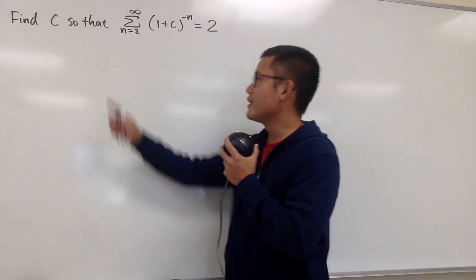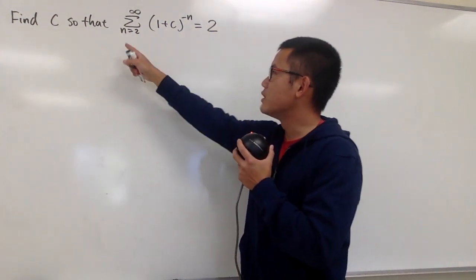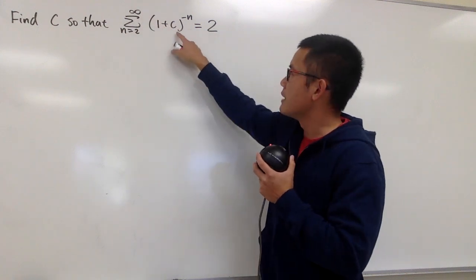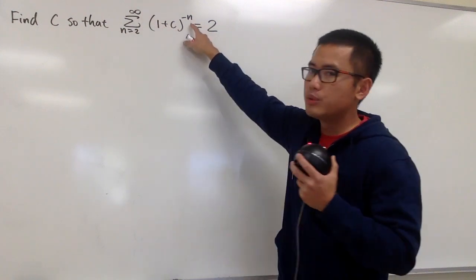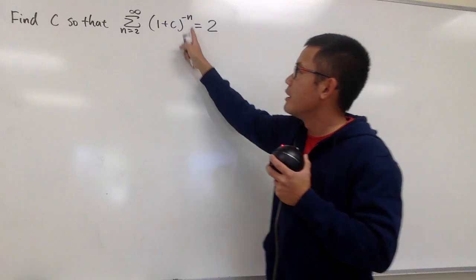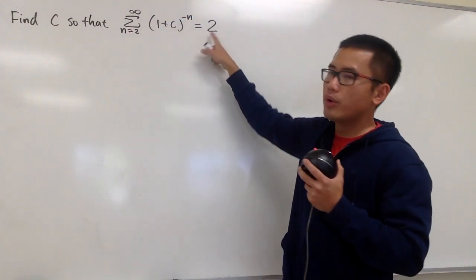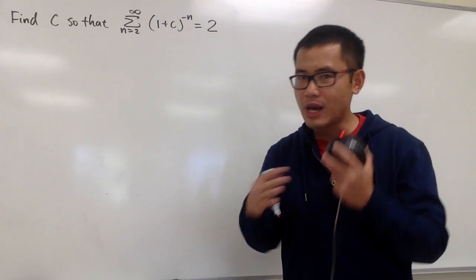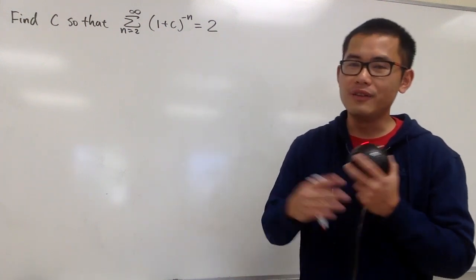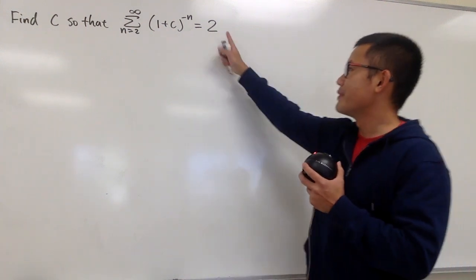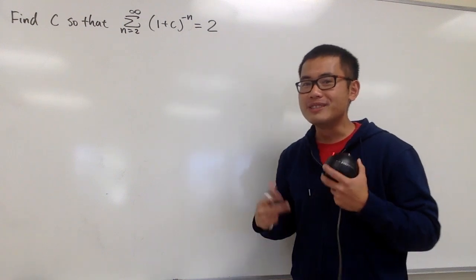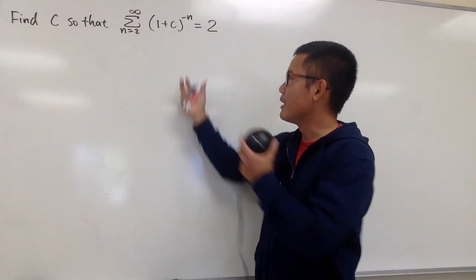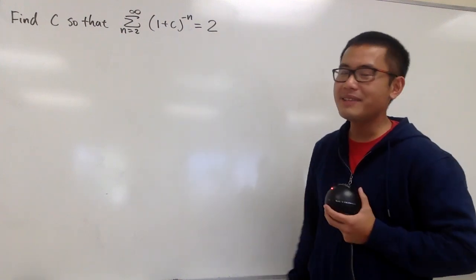Here's a fun question. We are going to find the value of c so that the series when n goes from 2 to infinity with (1 plus c) raised to the negative n power is going to be equal to 2. So we're not trying to calculate the value of the infinite sum — we know the answer already. We're trying to figure out the c value so we can plug in and make this work out nicely.